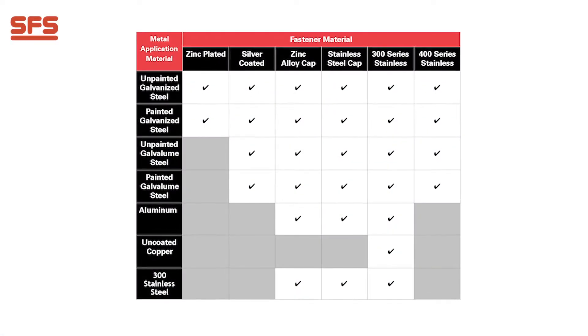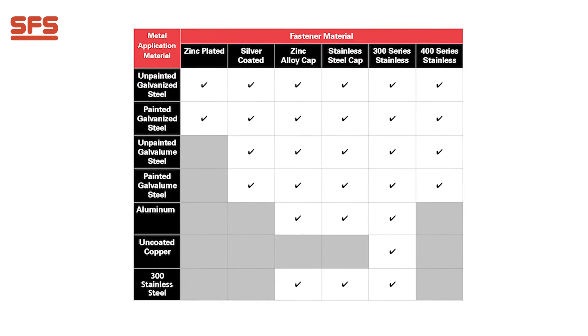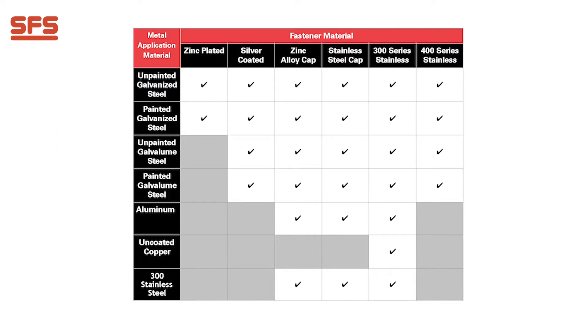In order to simplify the selection process, a simple compatibility chart has been generated. Use the chart on screen to ensure your specific metal panel material is compatible with the material of the SFS fastener.